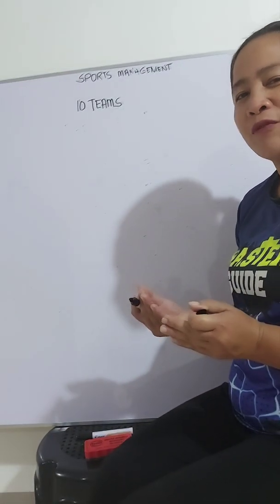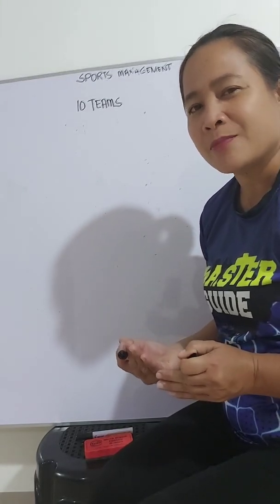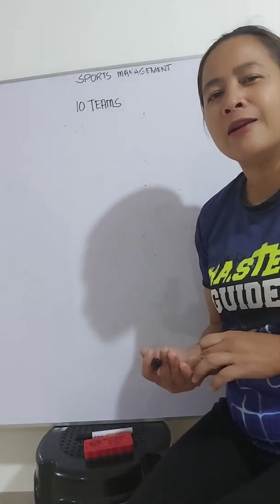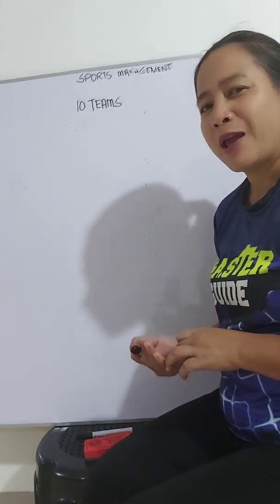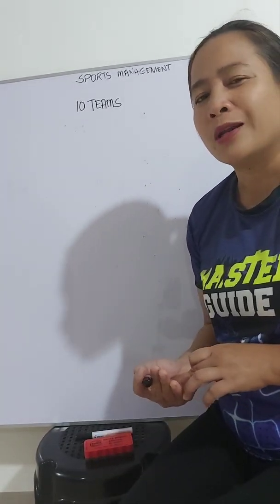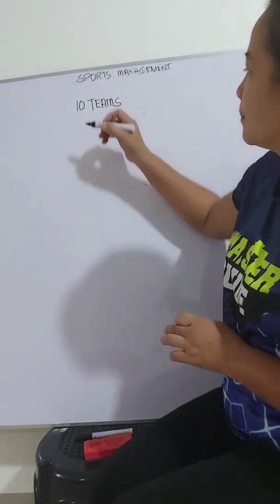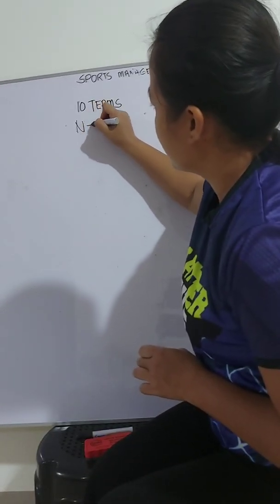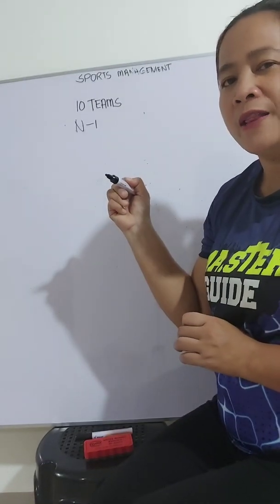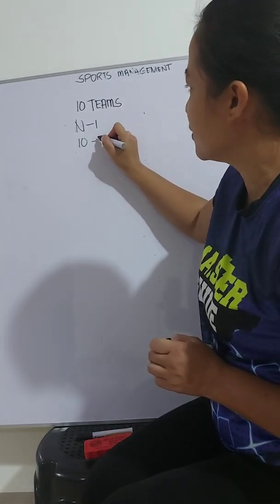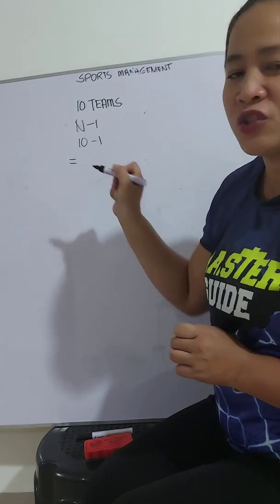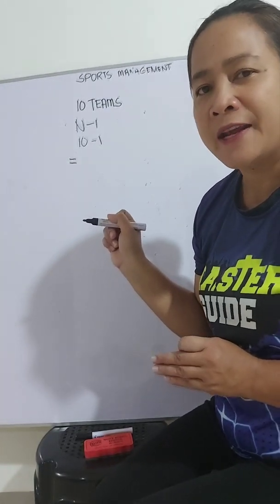We'll be having the formula which is N minus 1. N represents the number of teams, competitors, and players. Minus 1 is constant. So N is 10 minus 1. The answer is 9 games.